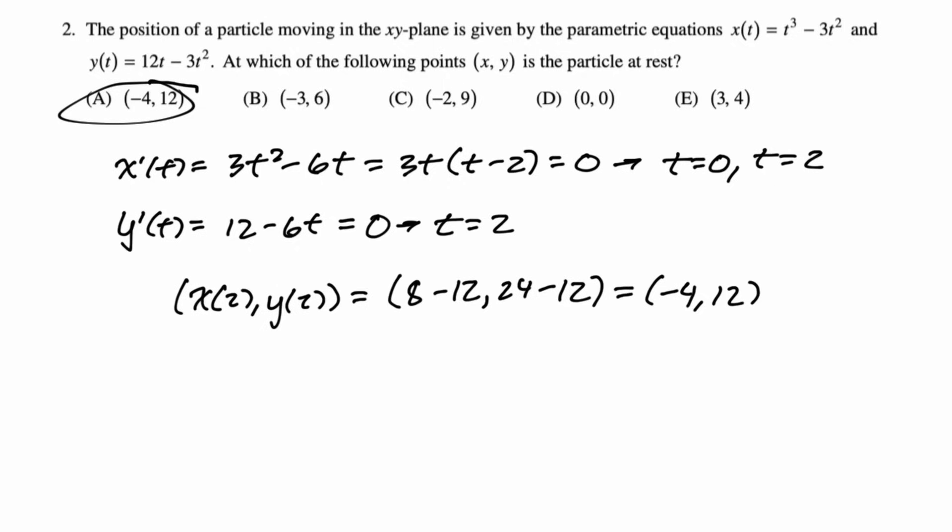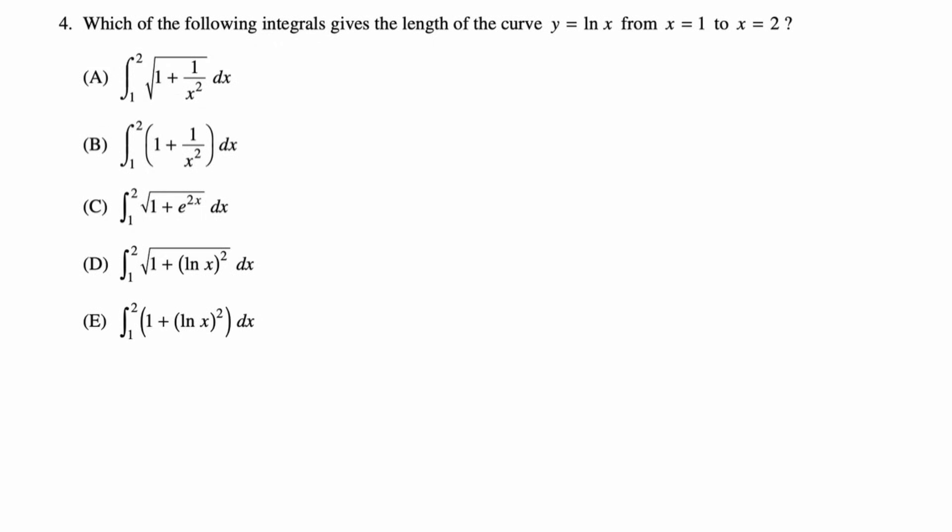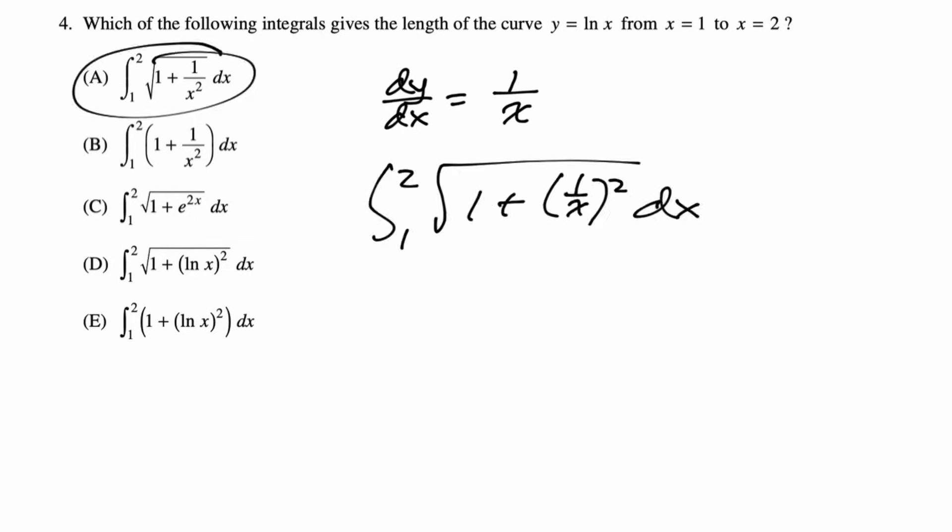The next question is about arc length. Arc length is the integral from A to B of the square root of 1 + (dy/dx)². We need dy/dx, then set it up: integral from 1 to 2 of the square root of 1 + 1/x². Just look at the answer choices — B is a distractor because it doesn't have the radical.